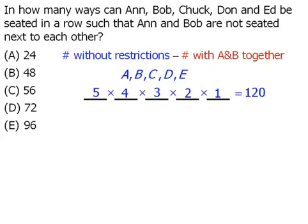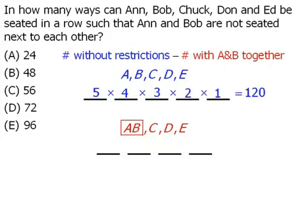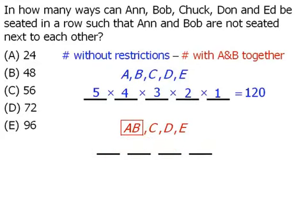Now we want to determine how many ways we can seat all 5 people such that Ann and Bob are seated together. To ensure that Ann and Bob are seated together, what I'm going to do is take Ann and Bob and glue them together, so they become one entity. So now that we have 4 entities, we only need 4 chairs. One possible arrangement would be this, another possible arrangement would look like this, and so on. So we have 4 entities and 4 chairs. We'll tackle this using our stage technique. In how many ways can we seat one entity in the first chair? Well, we have 4 entities to choose from, so we can accomplish this in 4 ways.